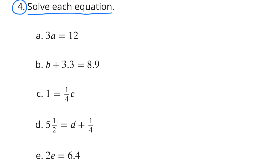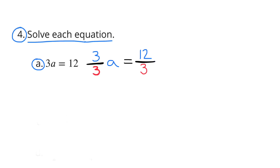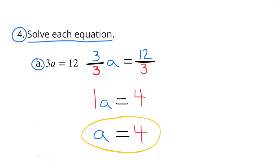Number 4. Solve each equation. A. 3A = 12. Since we're solving for A, we need to get A to be 1A, so we divide both sides by 3. 3A divided by 3 equals 1A, and 12 divided by 3 equals 4. So A = 4.